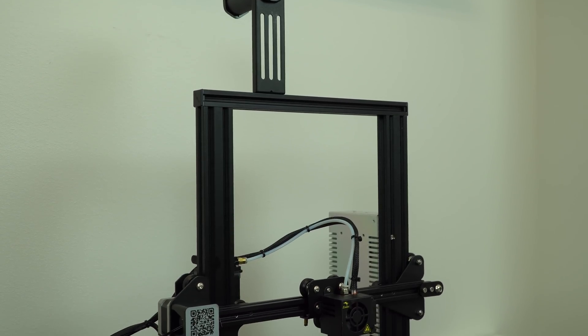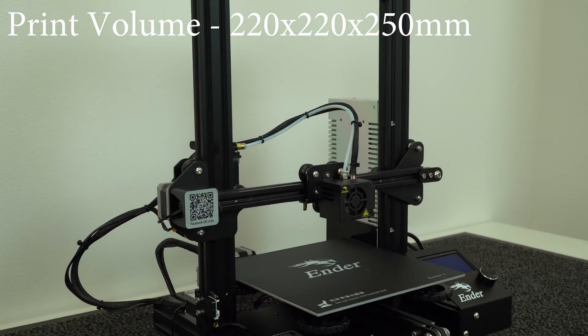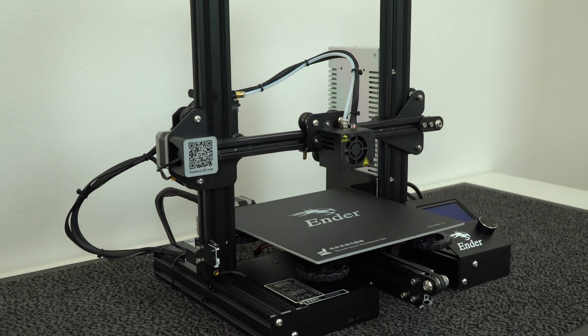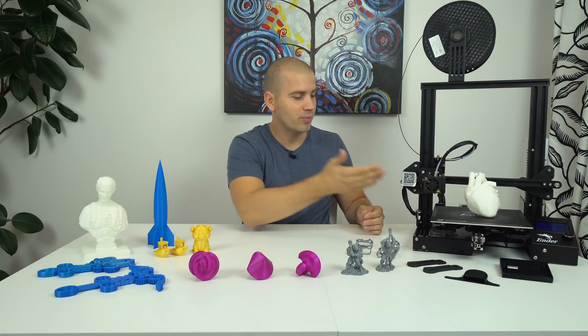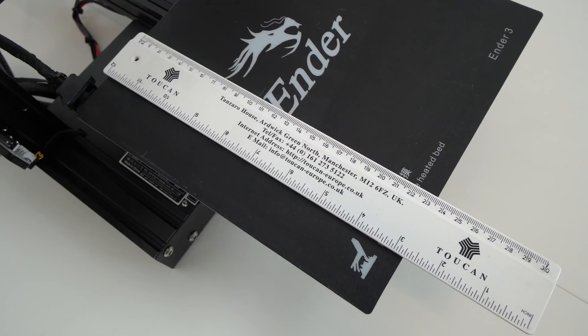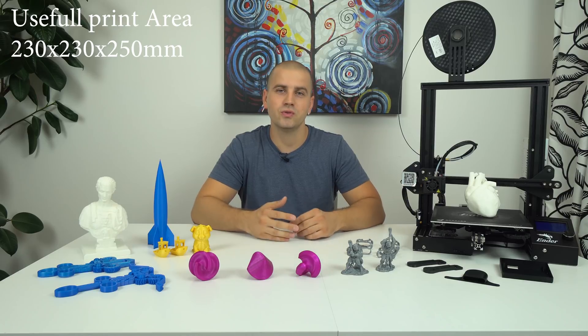Ender 3 comes with a build volume of 220x220x250mm, which is already bigger than most other E3 machines. But it comes even better, because in reality the build plate is 235mm on X and Y axis. So I would say that you can squeeze 230x230mm of useful print area, which is great.